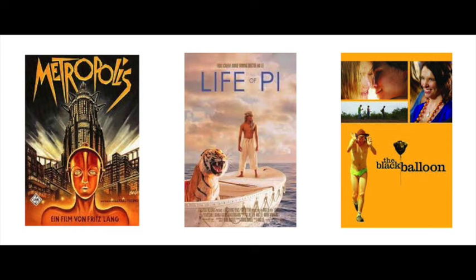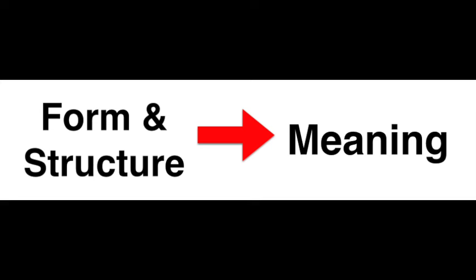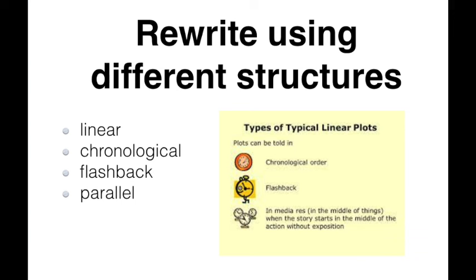Composing your own text that builds on or borrows from a prescribed text is the best way for you to develop your understanding of how the form and structure of a text type shapes meaning. The HSC markers' feedback consistently addresses that students need to demonstrate their understanding of structure and form in their HSC essays. My recommendation here transcends just plain creative writing and requires that you also create visual text. Getting back to the writing side, I'd encourage you to experiment with the structure of your composition — rewrite the same narrative using different structures: linear, chronological, flashback and parallel. Again, analyse how the change in structure transforms the meaning of the writing.